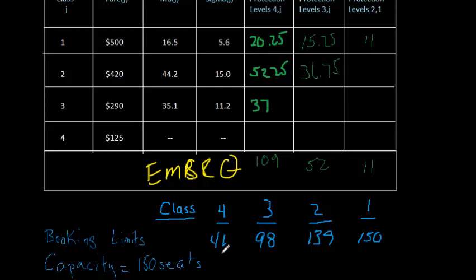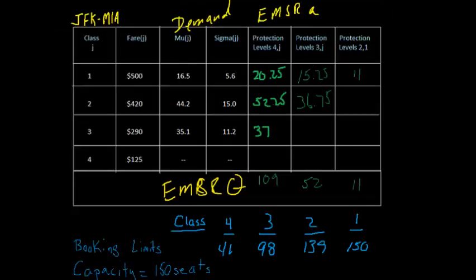And those are the numbers that would be input into the reservation system for the seats to be sold. So there you are. These are the EMSR-A protection levels for the JFK Miami market given these fares and these demand forecasts.